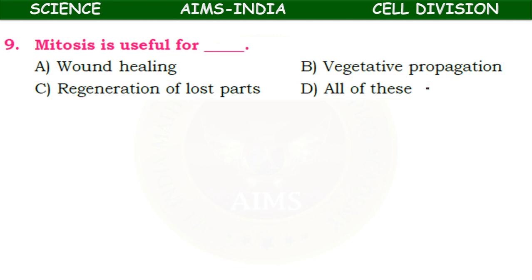Mitosis is useful for — wound healing, vegetative propagation, regeneration of lost parts, or all of these? The answer is all of these. Whenever a wound occurs, the cells at the margin of the wound will undergo cell division and fill the wound so that it gets healed. This is one of the important functions of mitosis.